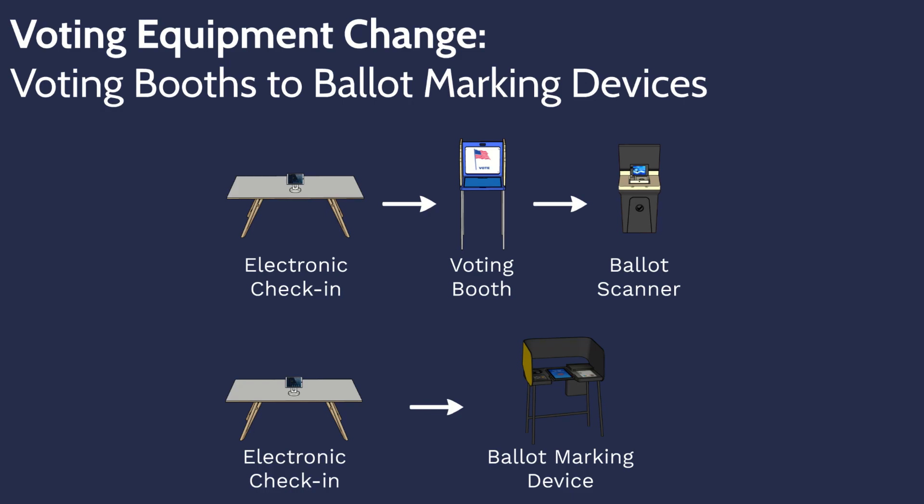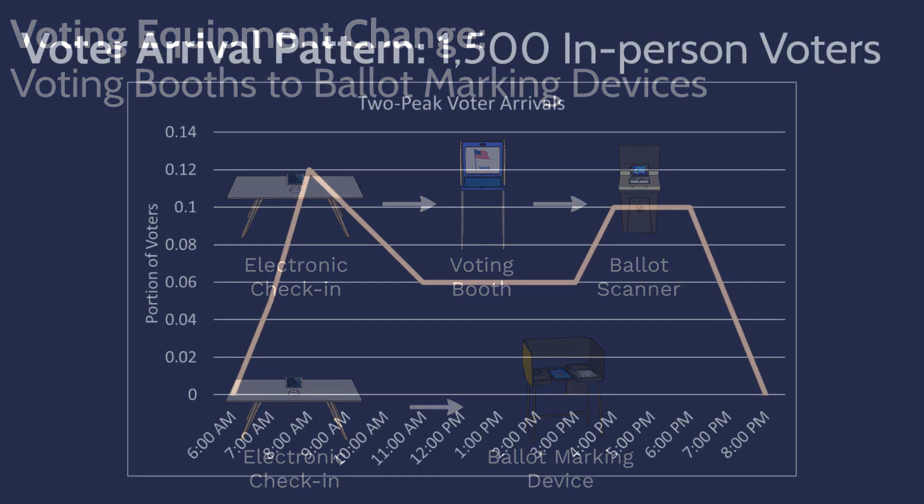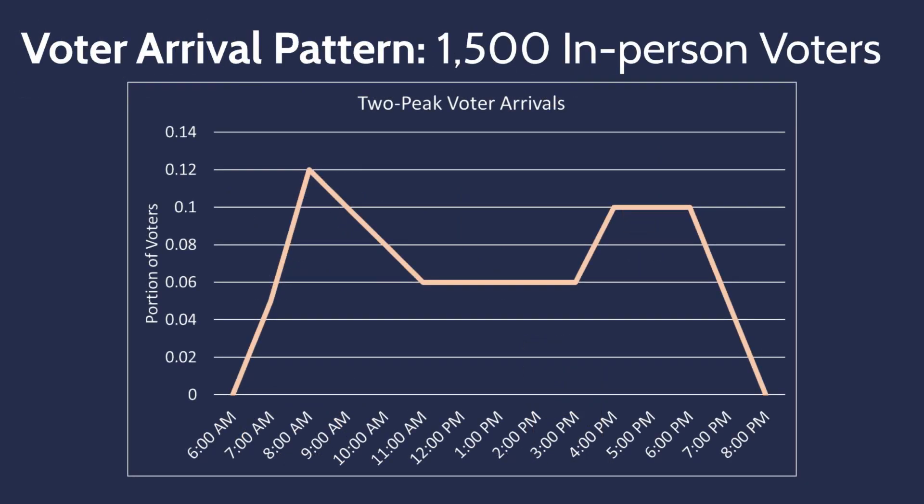To simulate the voting process, we assume that 1,500 voters turned out to the polling location following the arrival pattern shown on screen. This arrival pattern represents a large number of arrivals in the morning, arrivals decreasing at midday, and a smaller peak in arrivals in the afternoon.